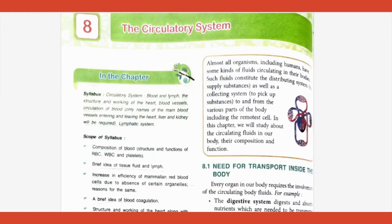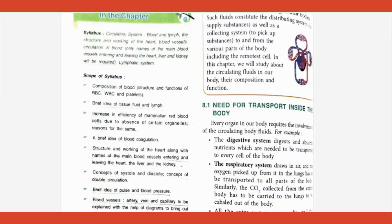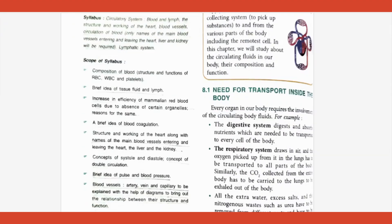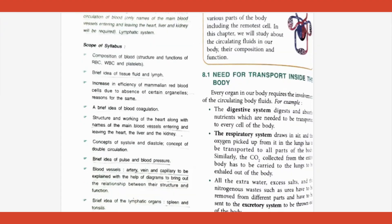So initially the chapter talks about what is a transport system and what is its function. We all know that the digestive system prepares nutrients, the respiratory system brings in oxygen and needs to get rid of carbon dioxide — all this requires a liquid medium or transport medium to carry it around, and that transport medium in our body is blood.